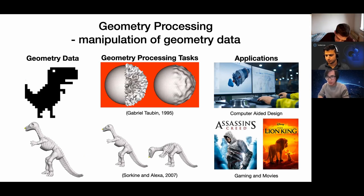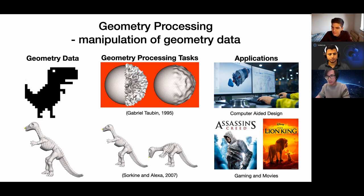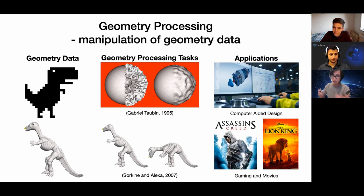What is geometric processing? In this work, we're mostly concerned with geometric processing as the manipulation of geometric data — basically any data form stored in the computer that represents a shape. Geometric processing includes smoothing shapes, deforming them, taking them apart, and so on. This has many applications in industry, such as designing parts for industry, designing game characters, and creating characters in movies.